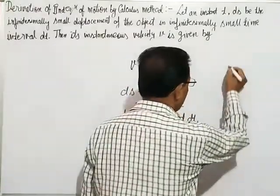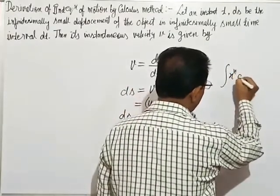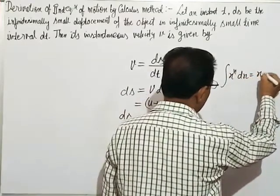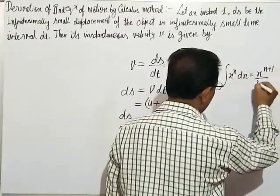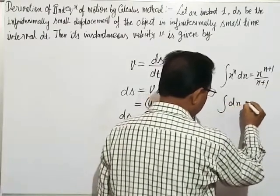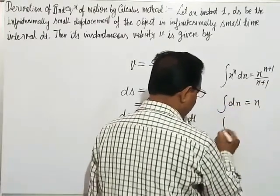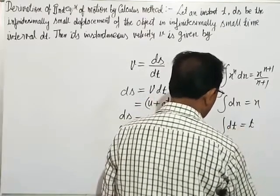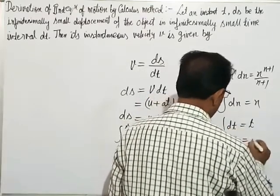The integration formula is ∫x^n dx = x^(n+1)/(n+1). The integration of ds equals s, integration of dt equals t, integration of ds equals s.